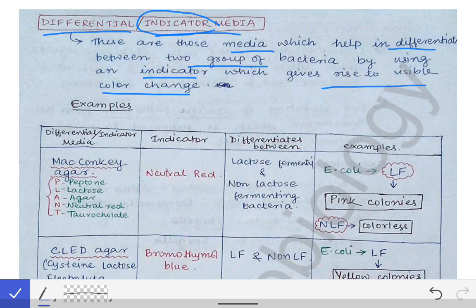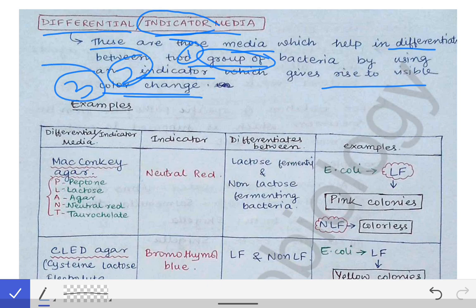For all differential or indicator media, there are three key points we should never forget: first, the different groups of bacteria being differentiated; second, the indicator used; and third, the type of color change. We will examine all differential and indicator media using these three points.